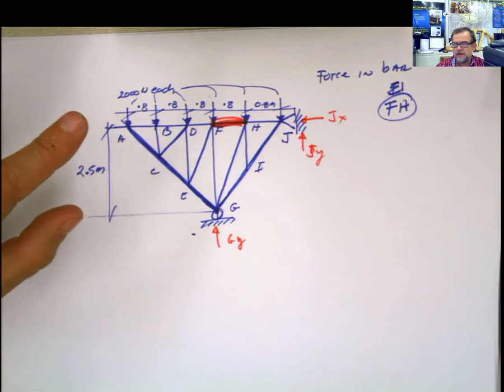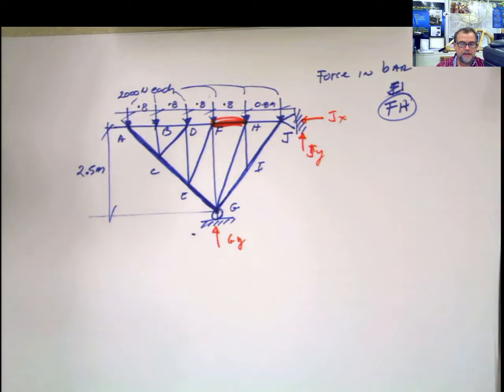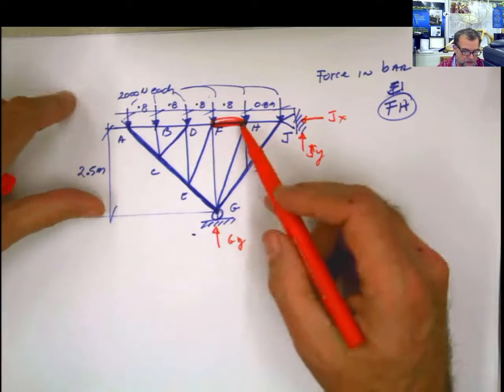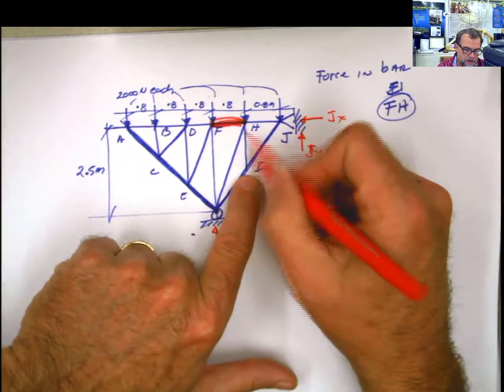It's because you're going to have to use the method of the section. Well, no, let me re-say that. You don't have to use the method of the section, but it's going to be the easiest way of doing it. So if it's FH and I have to cut three bars, by the way, I don't know if you have realized that this member here is a zero force member.